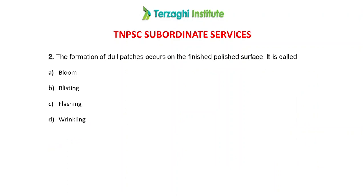Next question: formation of dull patches occur on a finished and polished surface. The options are Bloom, Blistering, Flashing, and Wrinkling. Bloom is the formation of dull patches on a polished surface — there will be a plain surface with a patch. That is Bloom.